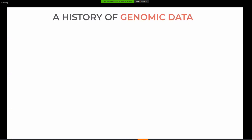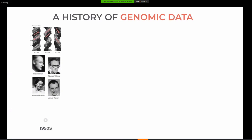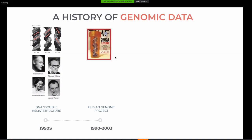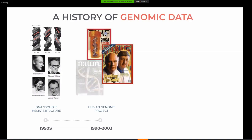So what is omics data? Let's talk about the history of genomic data to understand how we got to where we are today. In the 1950s the DNA double helix structure was discovered, and as a result we understood that the way data is recorded in DNA has to do with a sequence — the sequence of nucleotides in DNA is what we call today genomic data.